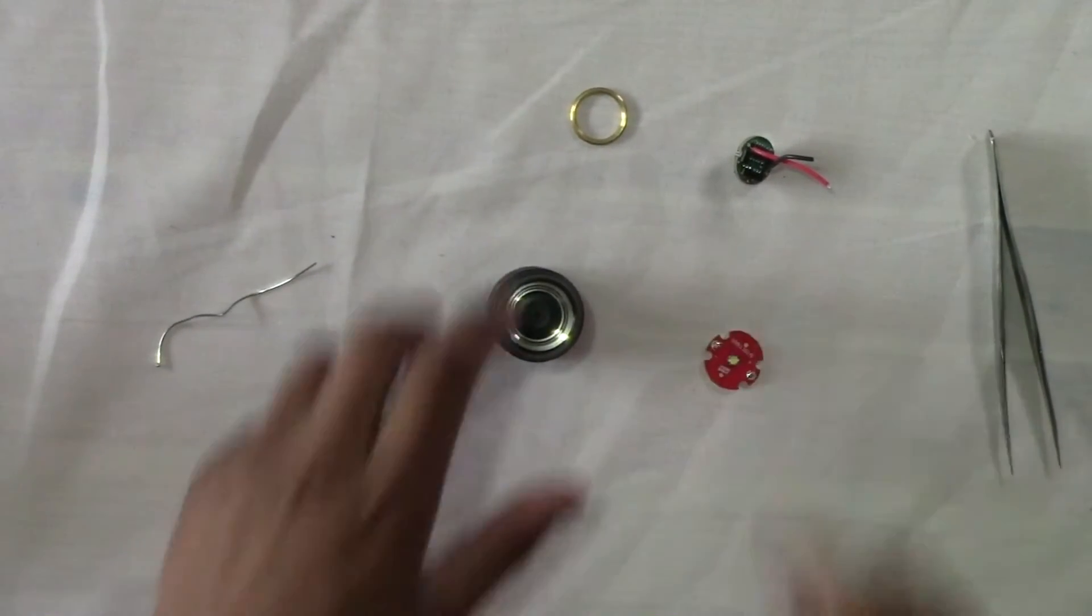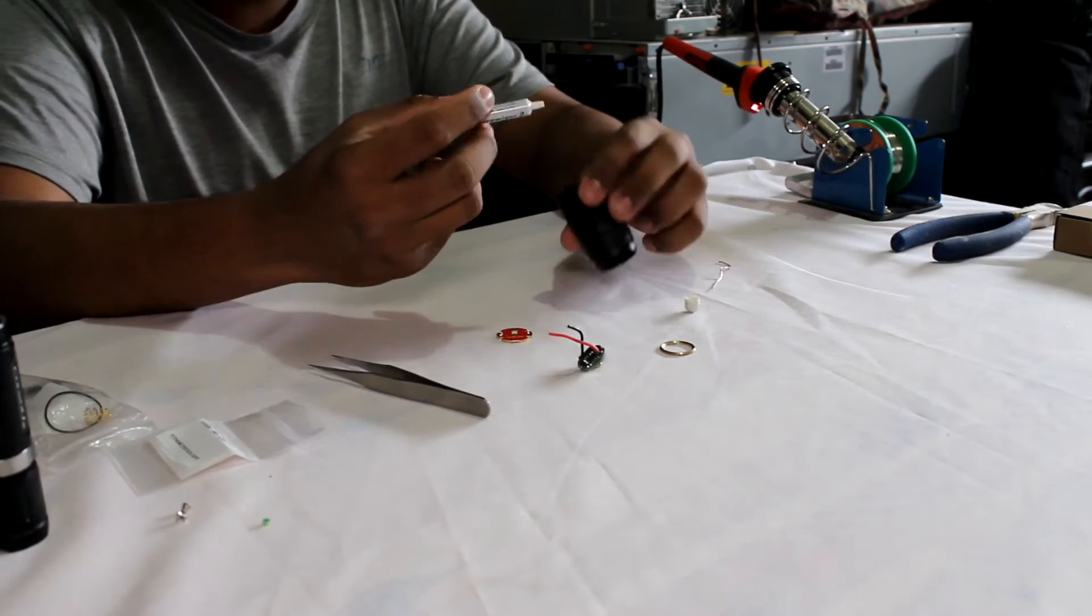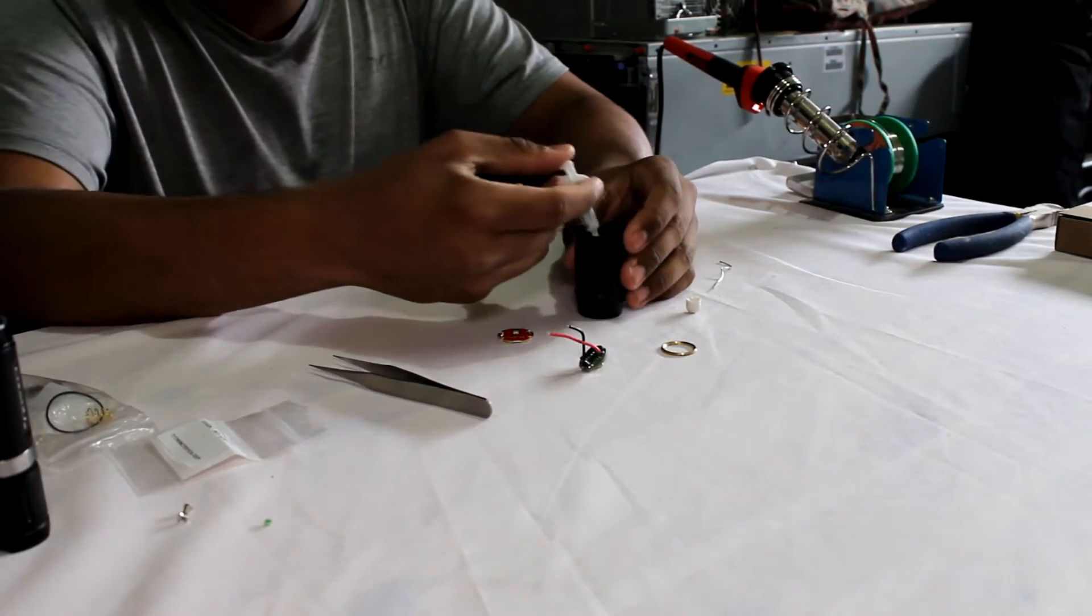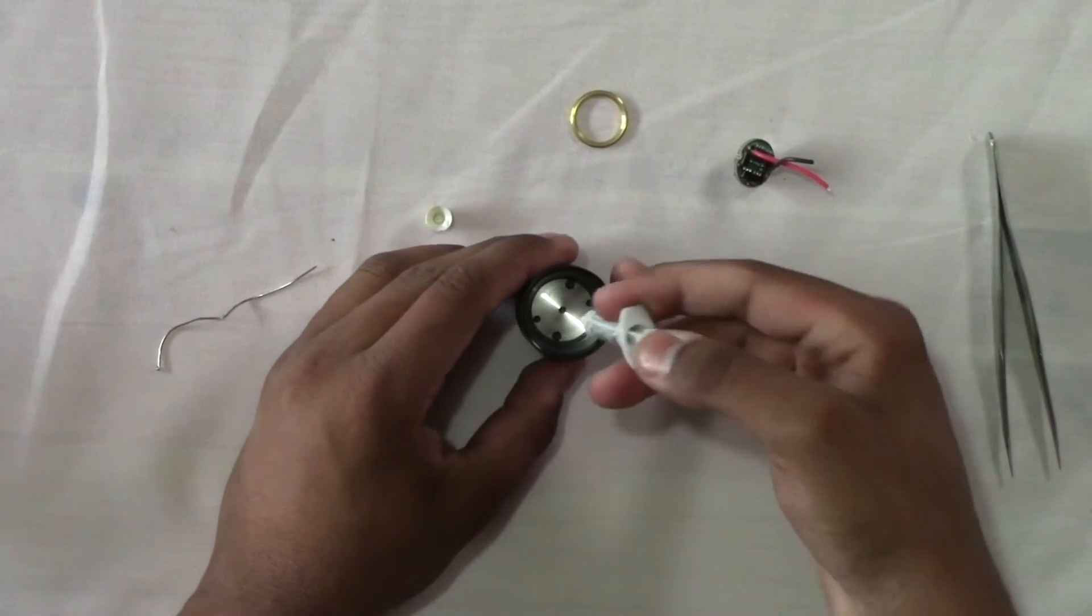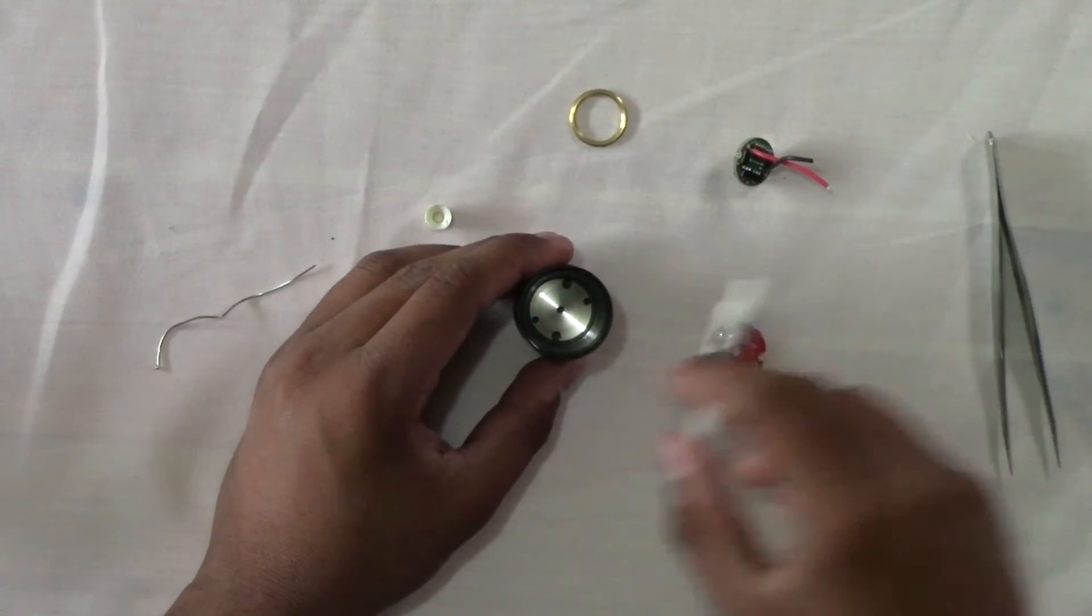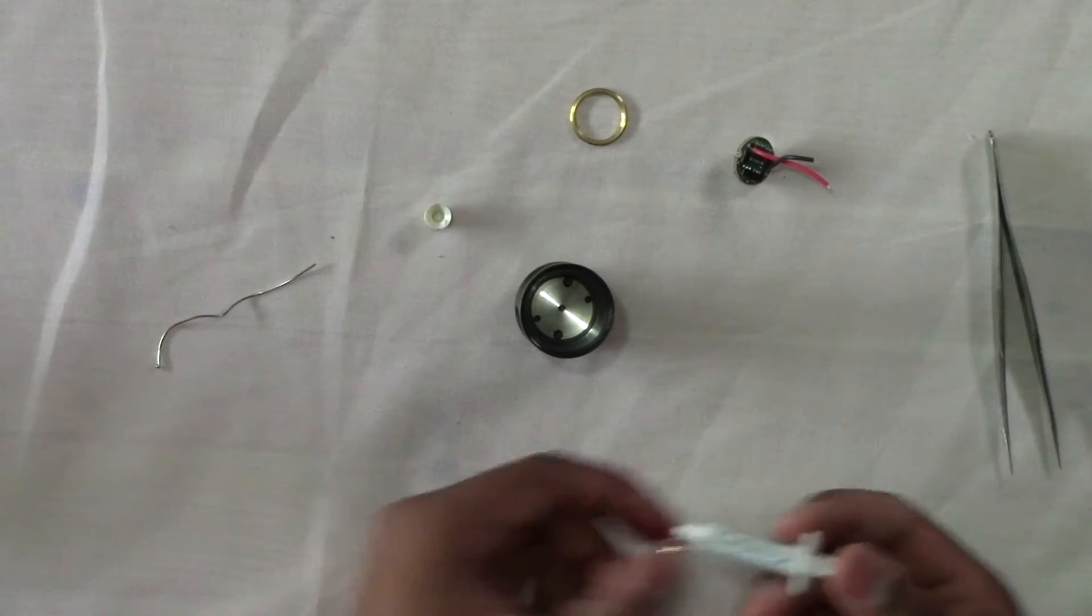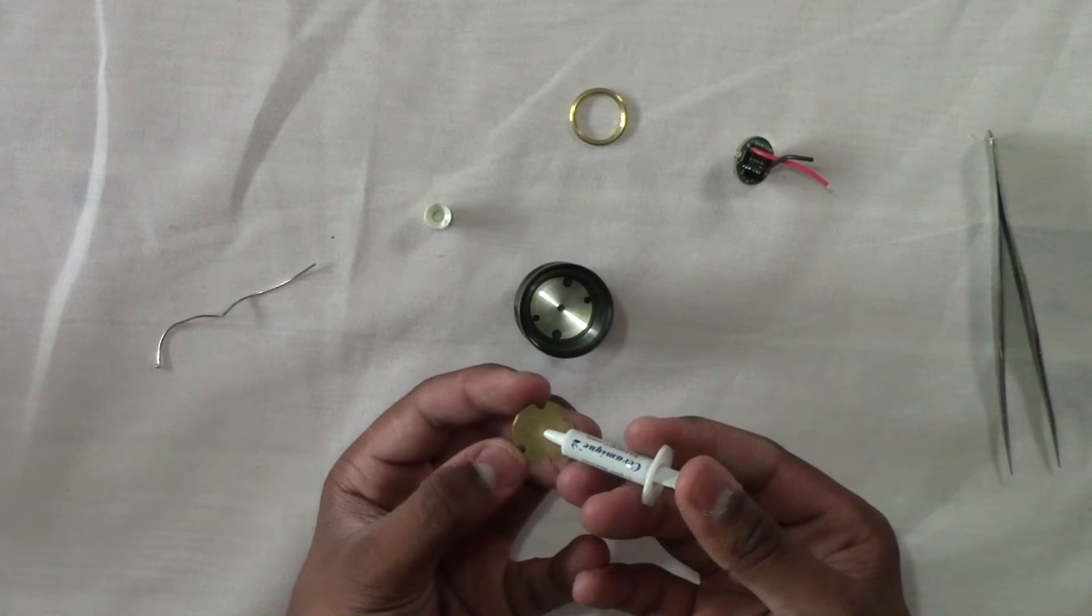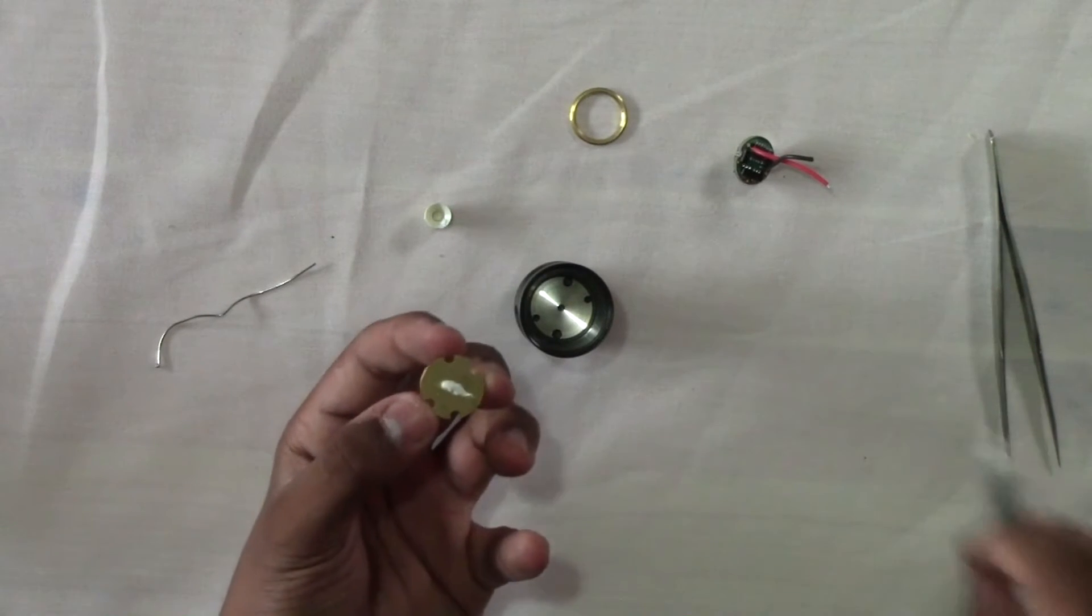Now what we're going to do is get the thermal paste. Take a small amount of thermal paste. Just a very, very small dab and place it in the center. If this is too deep for your thermal paste like mine is, you can put it on the back of here. Just a very small amount. It will flatten itself out and spread out so that's more than enough.